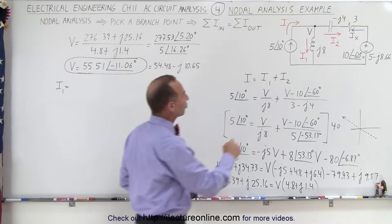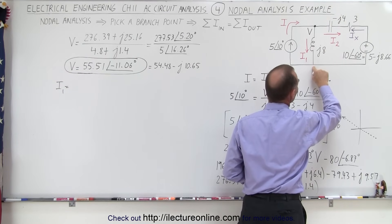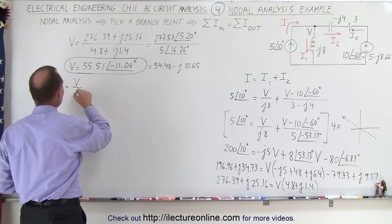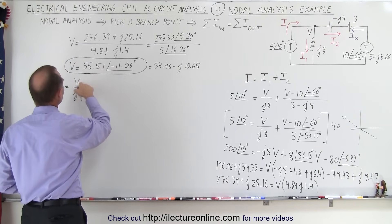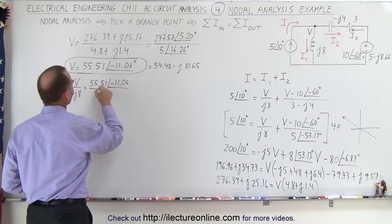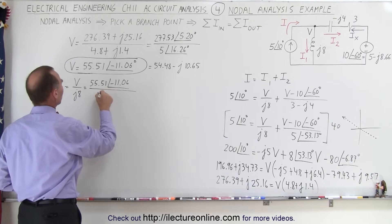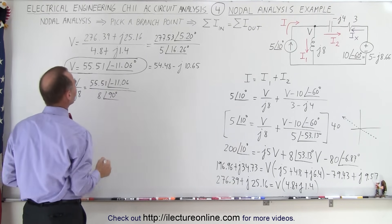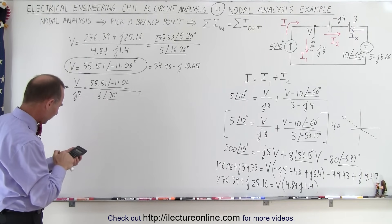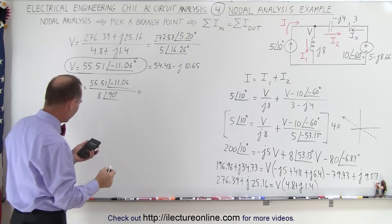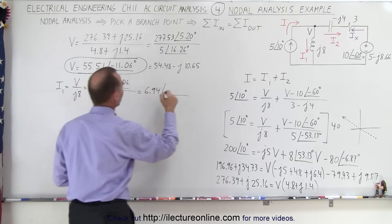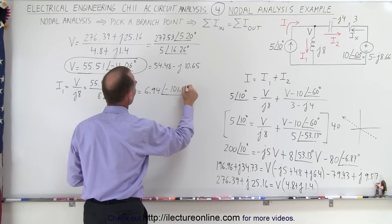To find i1, we divide the node voltage v by the impedance j8. So i1 equals 55.51 at minus 11.06 degrees divided by 8 at 90 degrees. This gives 55.51 divided by 8, which is 6.94, at a phase angle of minus 11.06 minus 90, which is minus 101.06 degrees.